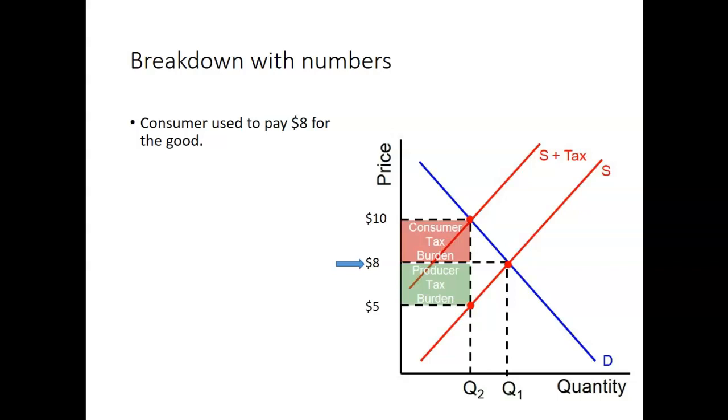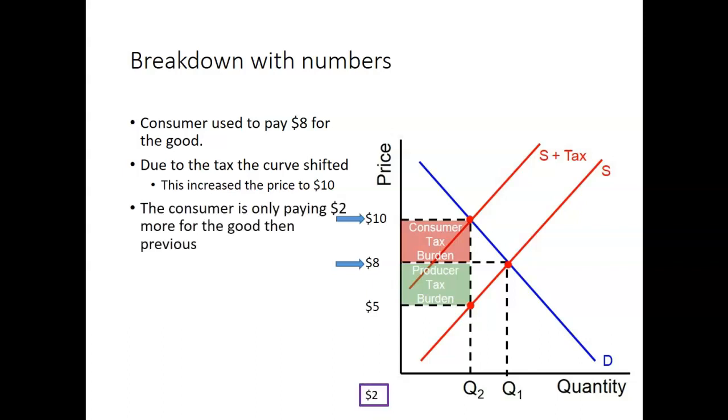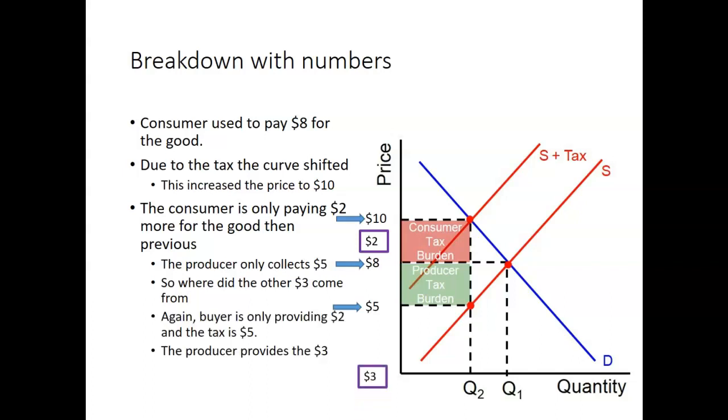So let's do a little breakdown. Consumers used to pay $8. Great. Due to the tax curve, this price increased to $10, which means the consumers pay two extra dollars out of this burden of tax. I can see the whole burden of tax is $5. That's the $10 minus the $5 on there. The producers only collect $5. So what does this mean? They need to find $3 from somewhere. Where does it come from? The producers have to produce that $3. So again, the buyer is only providing $2. Total tax is $5 and the producer is producing $3. So the burden of tax is $2 to the consumers and $3 to the producers times again the quantity of Q2.